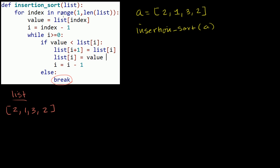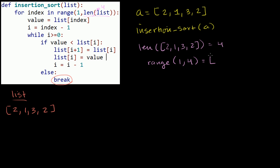We enter into the function: for index in range. So what is len of the list? Len of our list — len is short for length — is just going to be 4 elements. So the call range(1, len(list)) is range(1, 4), which returns the list starting at 1 up to but not including 4: 1, 2, 3. These are the indices we want to use, and index is going to keep incrementing between these — it'll be 1 first, then 2, then 3.